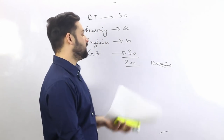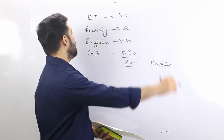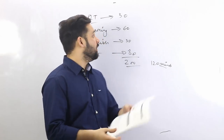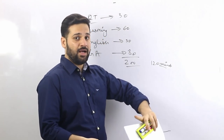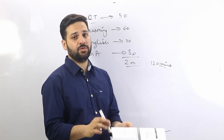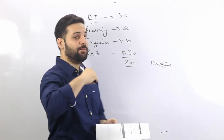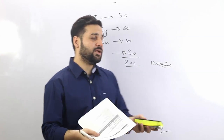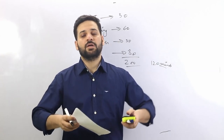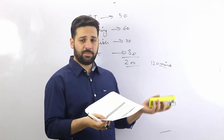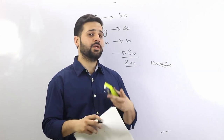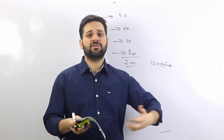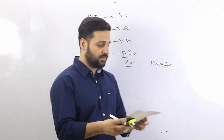To summarize the exam pattern, the quantitative aptitude part is the same as the IBPS PO or SBI PO exam. This section is the same level and difficulty. You will find similar data interpretation questions — 10 to 15 DI questions in two sets — then quadratic equations, number series, time and work, time and distance — these types of questions.